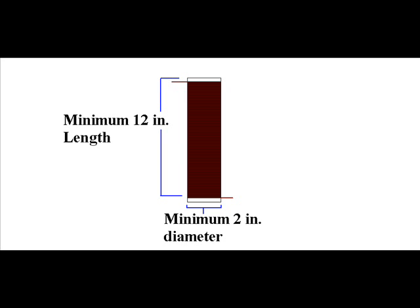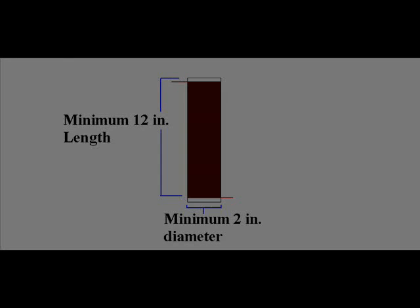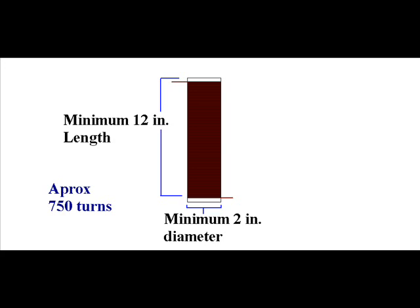An empty paper towel roll works great as long as it's completely dried. The secondary winding will have approximately 750 turns. You can use calculations to design a specific size for a primary and secondary winding, but a winding with a 12 inch length and 2 inch diameter will at least give you a good place to start.